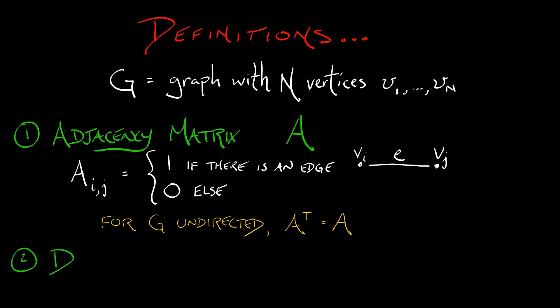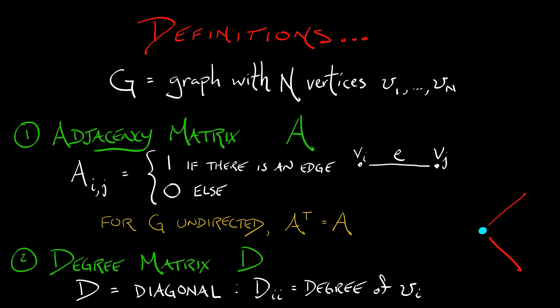Next step is something even simpler, something called the degree matrix. This matrix D is going to be a diagonal matrix, and the i-th entry along the diagonal, D_ii, is going to be the degree of the i-th vertex of our graph. And what I mean by degree is the number of edges that are attached to that vertex. Okay, so we have the adjacency matrix A, degree matrix D. These are both n by n matrices, square matrices on the vertex set.